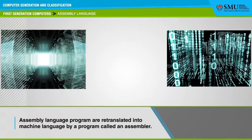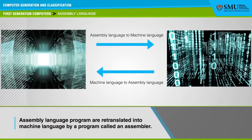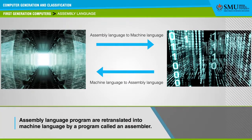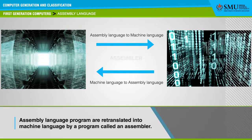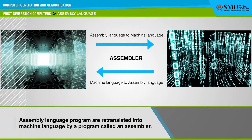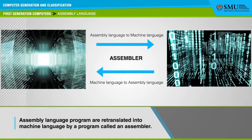Packages written in high-level programming languages are retranslated into assembly language or machine language by a compiler. Assembly language programs are retranslated into machine language by a program called an assembler. Every CPU has its own machine language; therefore, programs must be rewritten or recompiled to run on different types of computers.